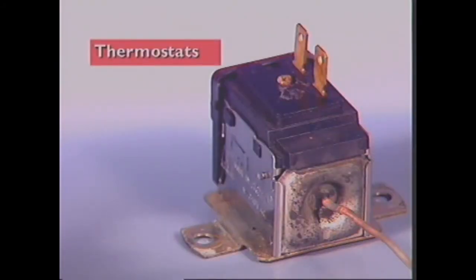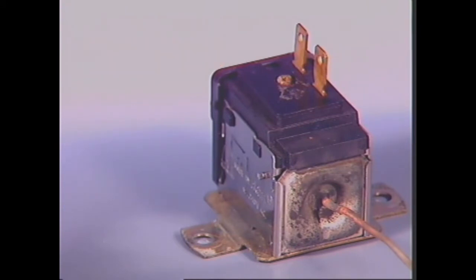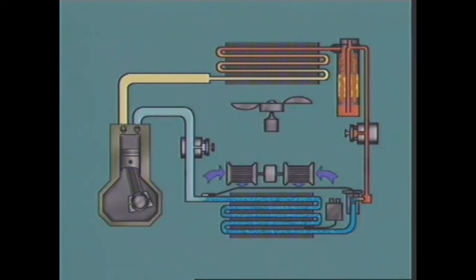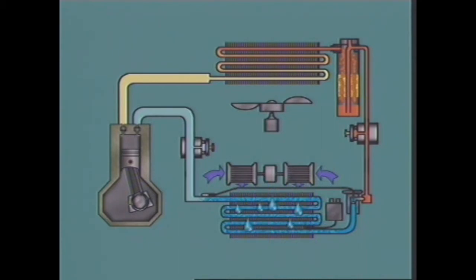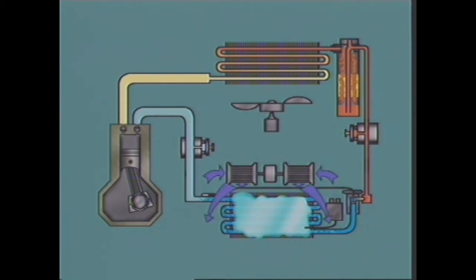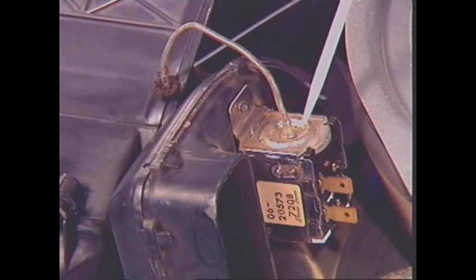This section examines thermostats. When warm air passes across the evaporator fins, the cooling action causes water vapor in the air to condense and adhere to the fins as water droplets. If the temperature of the fins drops to zero degrees Celsius or below, ice will form on the fins, restrict the airflow, and prevent heat from being transferred to the refrigerant. A thermostat is used to monitor the temperature of the evaporator fins and control system operation within set limits.